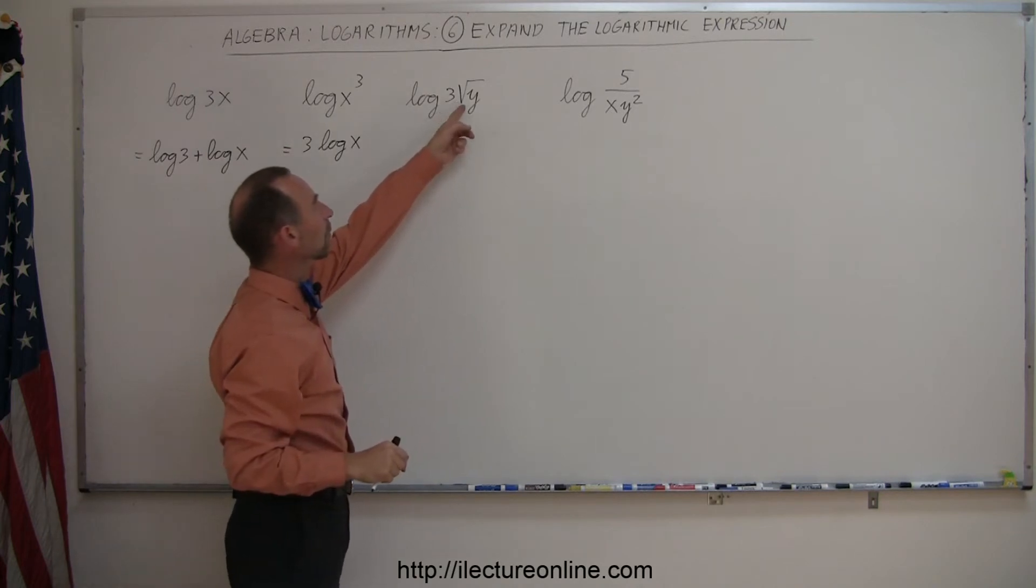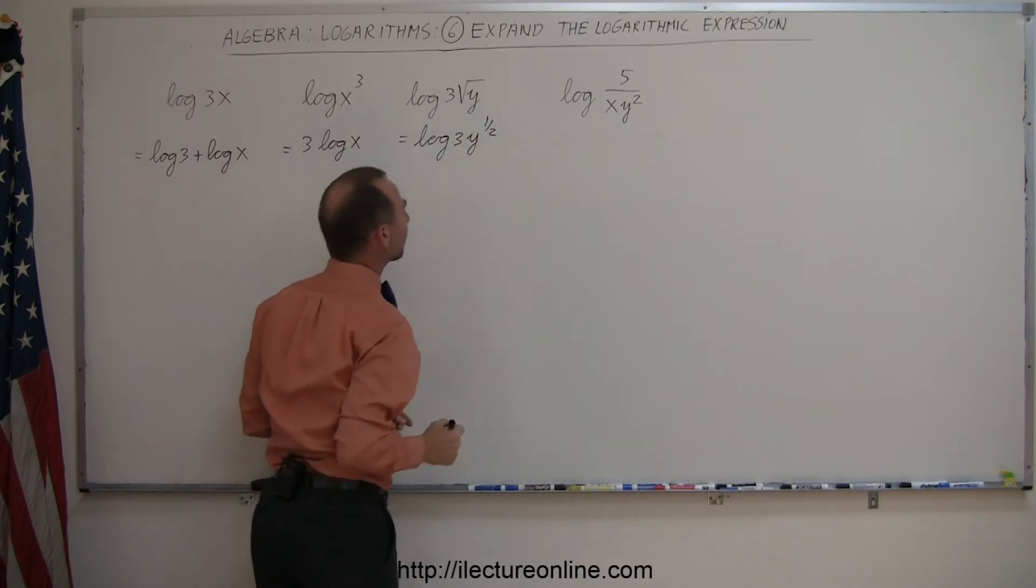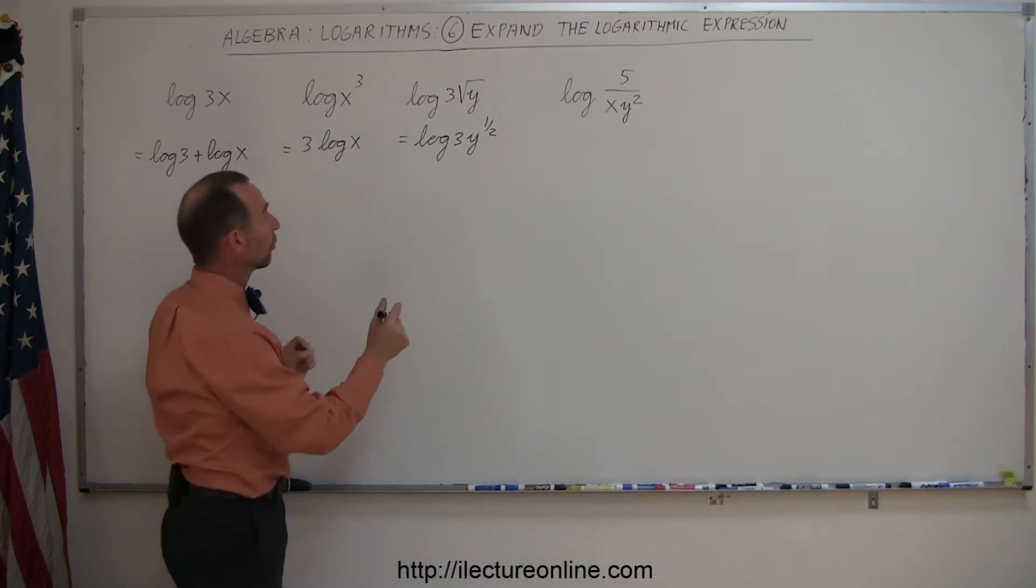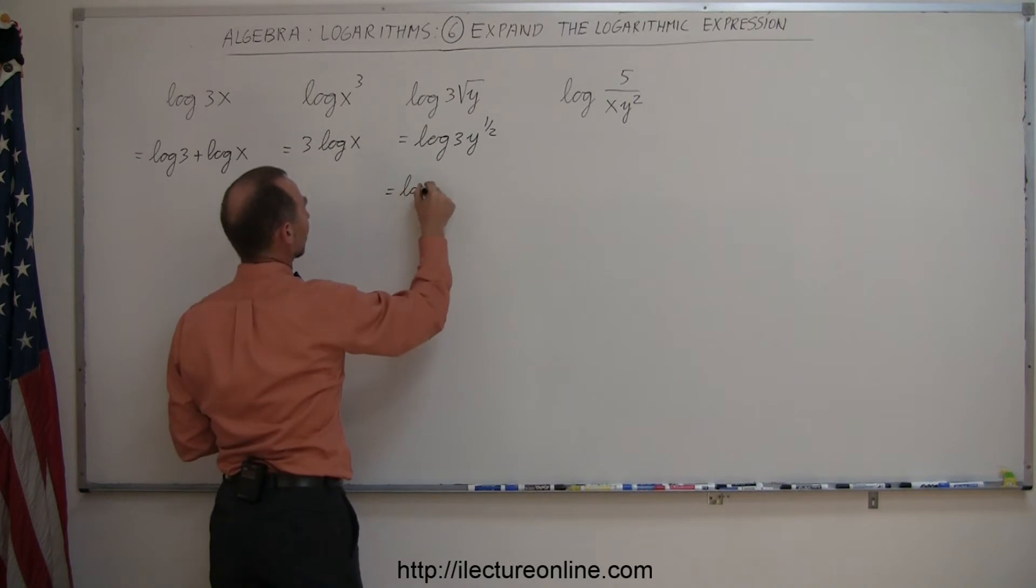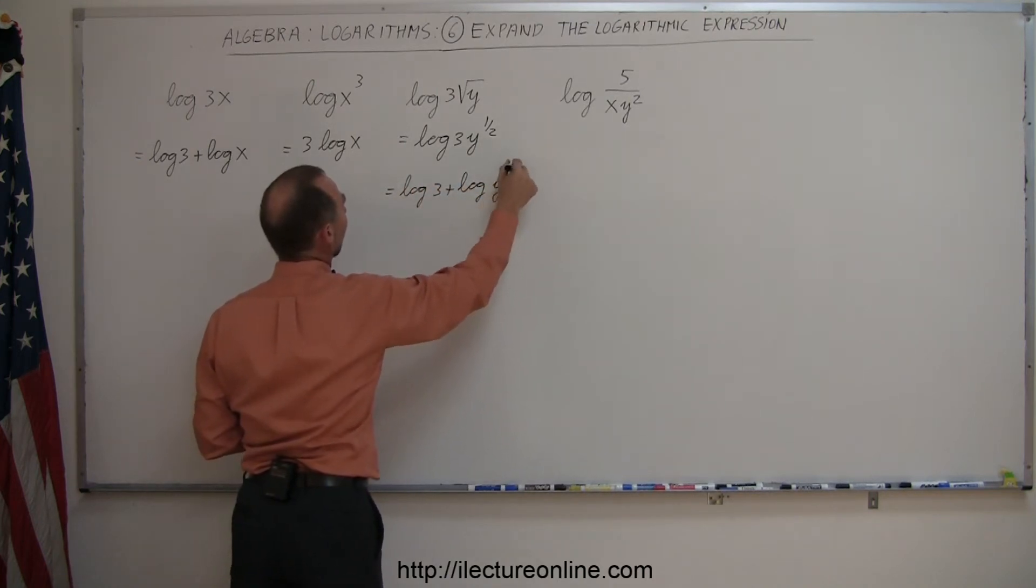Here we have a product, and we can rewrite this one, so this can be written as the log of 3 times y to the 1 half power. So first we're going to separate those two, so this can be written as the log of 3 plus the log of y to the 1 half power.